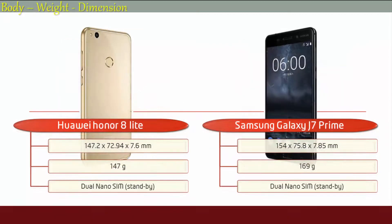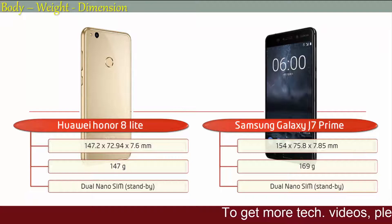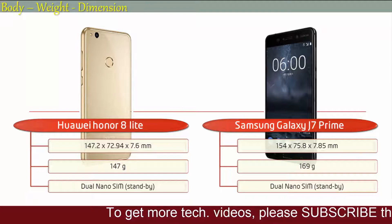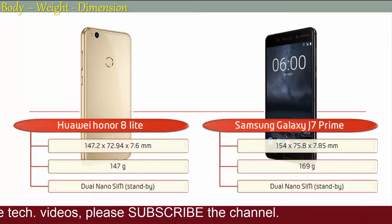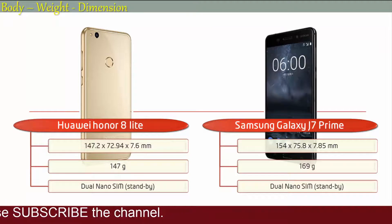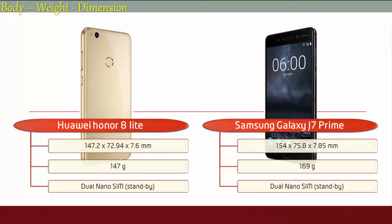If we talk about the dimensions of the Honor 8 Lite, it is 147.2 x 72.94 x 7.6 mm in thickness and weighs 147 grams, with dual nano SIM. Whereas the dimensions of the Nokia 6 are 154 x 75.8 x 7.9 mm, weighing 169 grams, with dual nano SIM standby support.